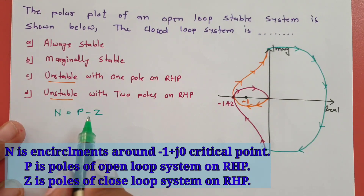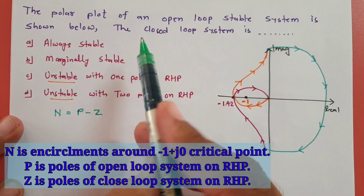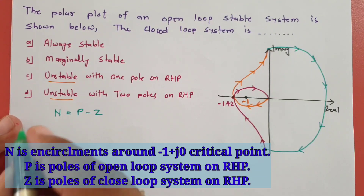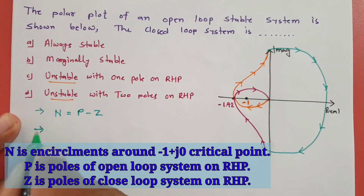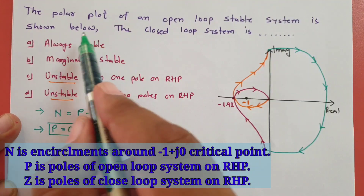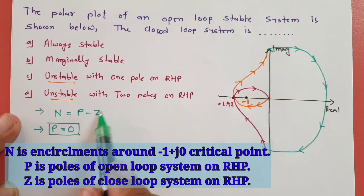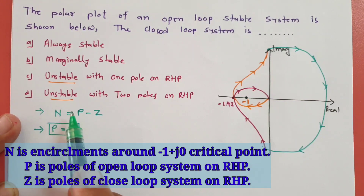The polar plot of the open loop system is stated to be stable, so we can say P = 0 — meaning there are no open loop poles on the RHP. Since P = 0, the formula simplifies to N = −Z. We now need to identify Z, the number of closed loop poles on the RHP, by counting encirclements around −1+j0.